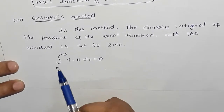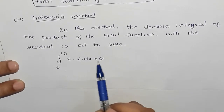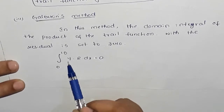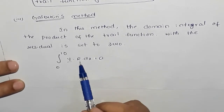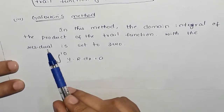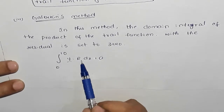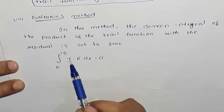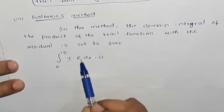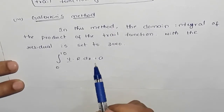The integral from 0 to 10 of y into r dx is equal to 0. Here we have the trial function, the residual function, and the weighted residual function. The integral of the product of these two is equal to 0. This method is Galerkin's method.